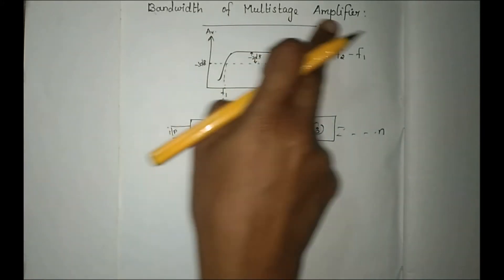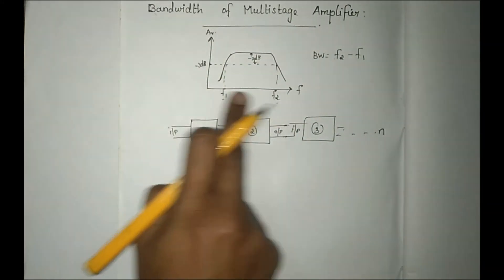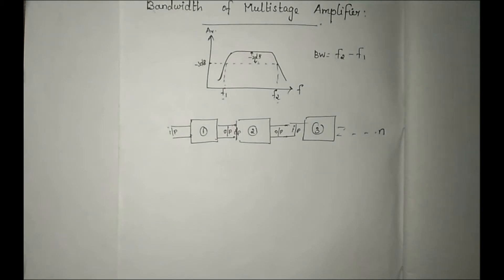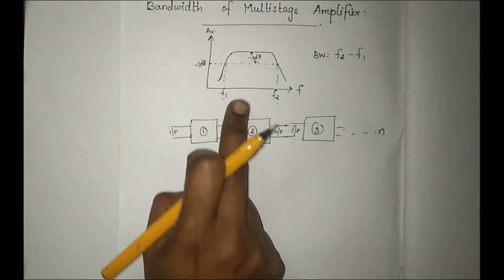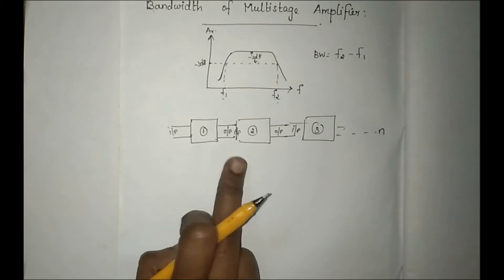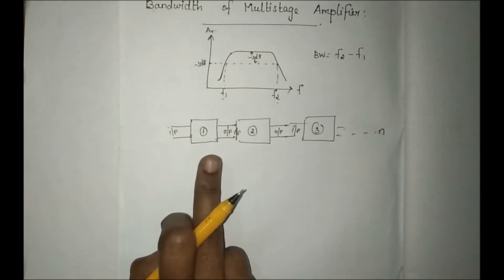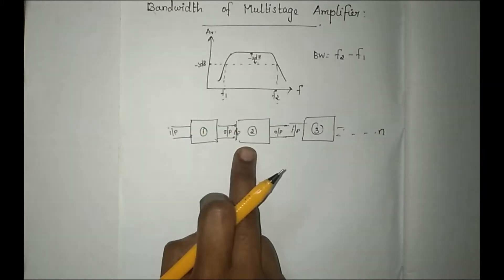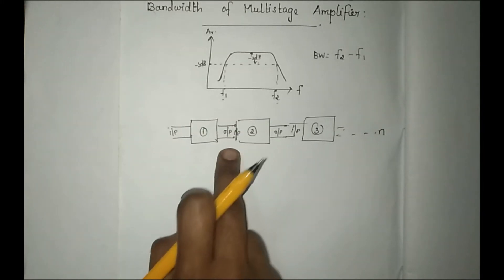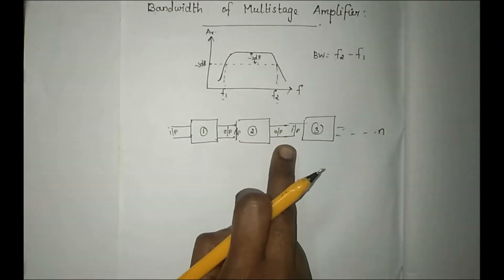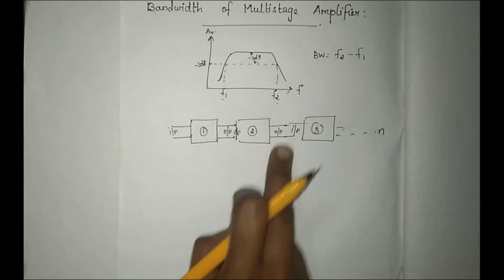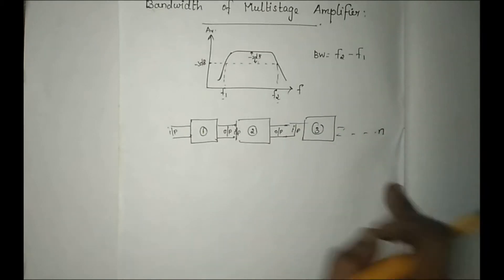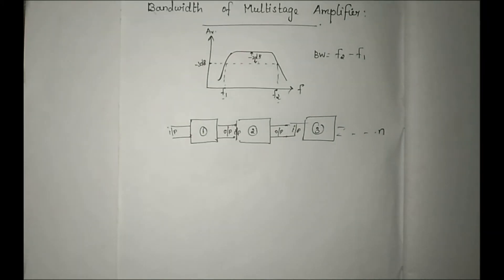So this is the bandwidth of the multi-stage amplifier. This graph shows the single-stage amplifier. In a multi-stage amplifier, the first stage gain becomes the second stage input, and the second stage gain becomes the third stage input. This is how you can see the effect on the bandwidth.